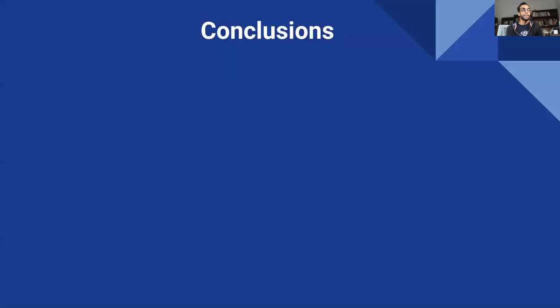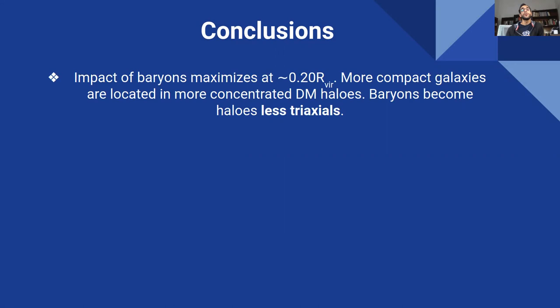So for the conclusions, the impact of baryons on the dark matter halos structure maximizes when it's measured within the 20% of the virial radius. More compact galaxies are located in more contracted dark matter halos.